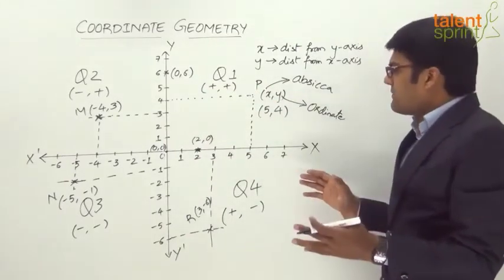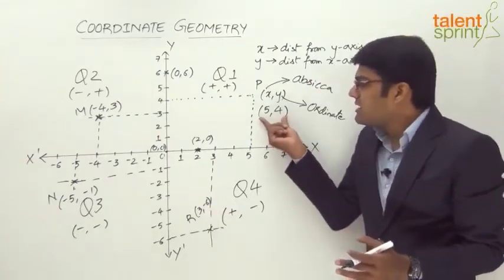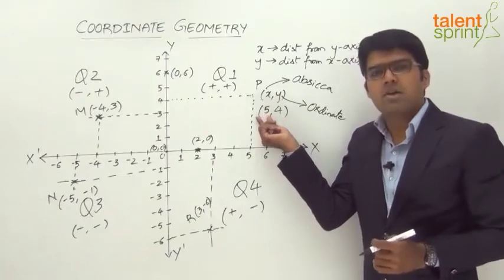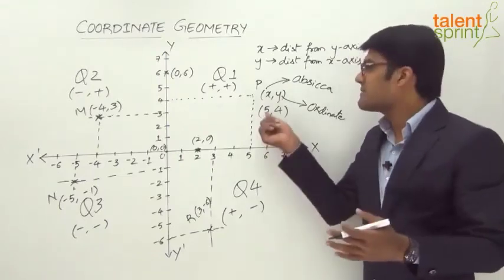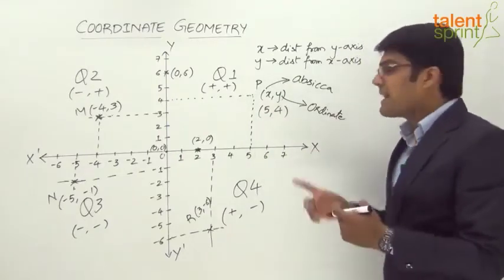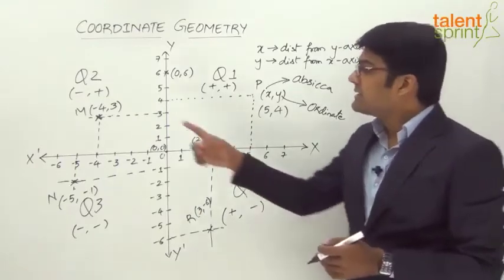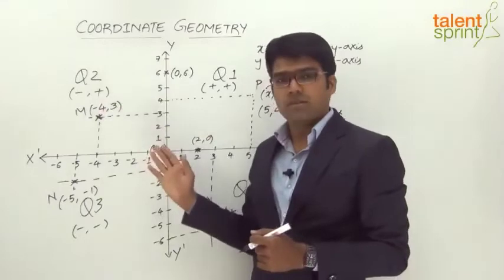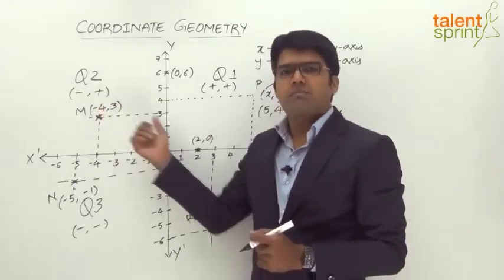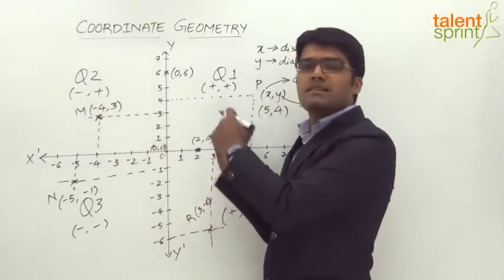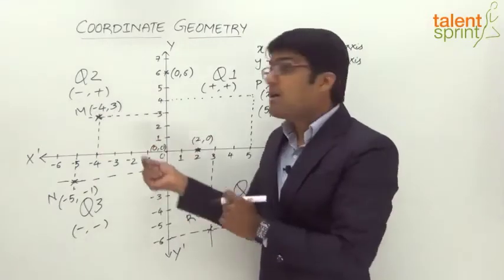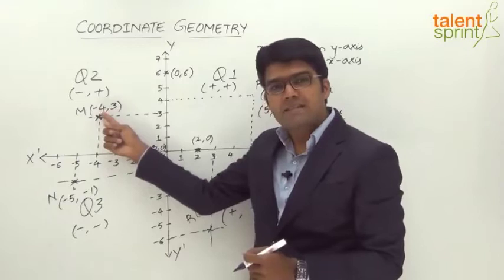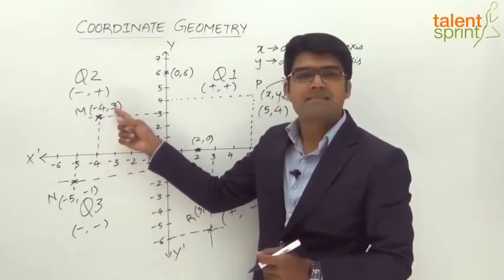So if the question asks what is the horizontal distance of the point (5, 4), the horizontal distance is 5, or the distance from the y-axis is 5. What is the distance from the x-axis? It is 4. In the case of (-4, 3), the distance from the y-axis is 4 — the minus only indicates it is in the second quadrant, but the distance in terms of magnitude is 4. The distance from the x-axis is 3.